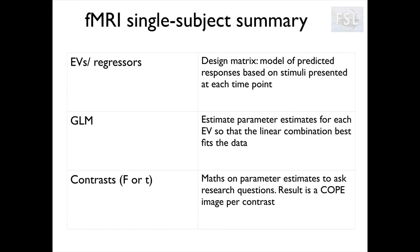For fMRI single subject, we need to build our design matrix, where we have one entry per time point, and where our explanatory variables or regressors are the model of the predicted response based on the stimuli presented at each time point. For example, we can model one EV per condition of our task. We then use the GLM to calculate the parameter estimates for each EV so that the linear combination of these EVs best fits the data. Finally, we set up T contrasts and F contrasts to ask a research question. The output is a contrast of parameter estimates, or COPE image, that we will use later for group comparisons.